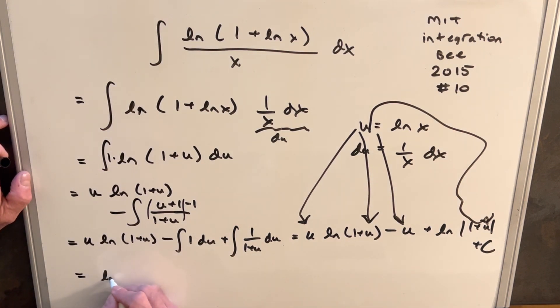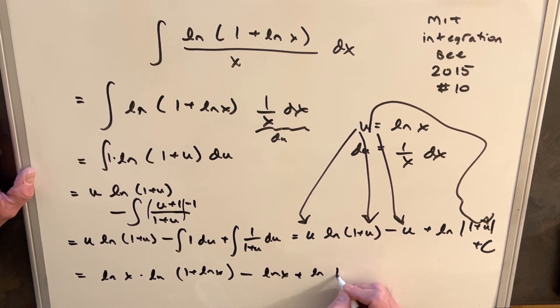You can see there's going to be a lot of ln in our answer, plus ln, plus ln, 1 plus another ln x, plus c.